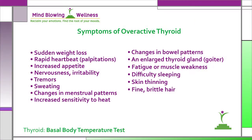Symptoms of hyperthyroidism or an overactive thyroid are sudden weight loss even when your appetite and the amount and type of food you eat remain the same or even increase, rapid heartbeat known as tachycardia commonly more than 100 beats a minute, irregular heartbeat known as arrhythmia or palpitations, increased appetite, nervousness, anxiety and irritability, tremors usually a fine trembling in your hands and fingers, sweating, changes in menstrual patterns, increased sensitivity to heat, changes in bowel patterns especially more frequent bowel movements, an enlarged thyroid gland known as a goiter which may appear as a swelling at the base of your neck, fatigue, muscle weakness, difficulty sleeping, skin thinning and fine brittle hair.